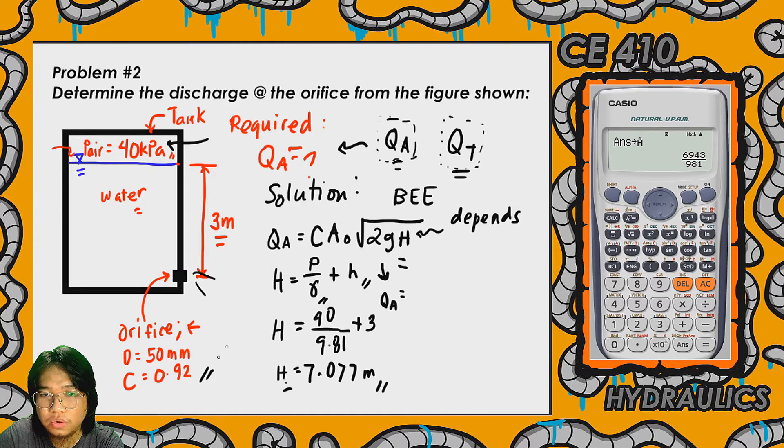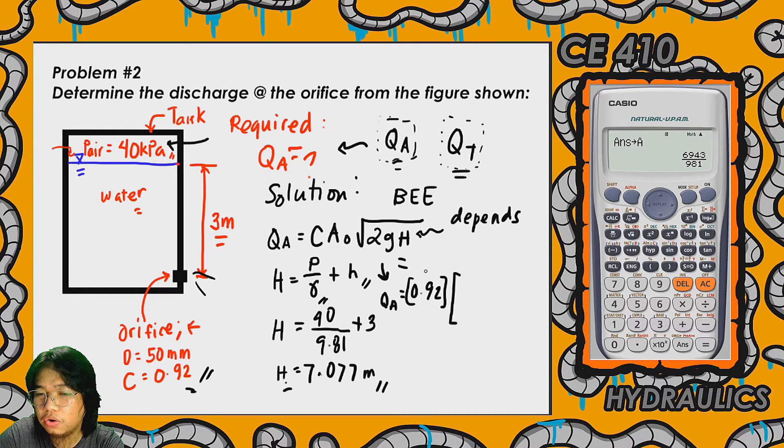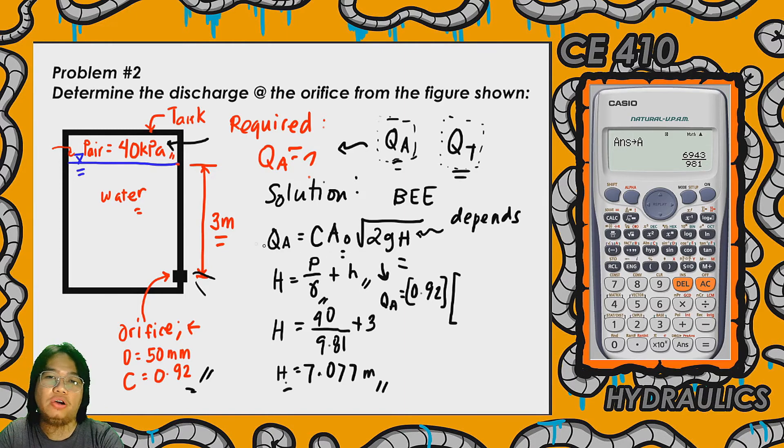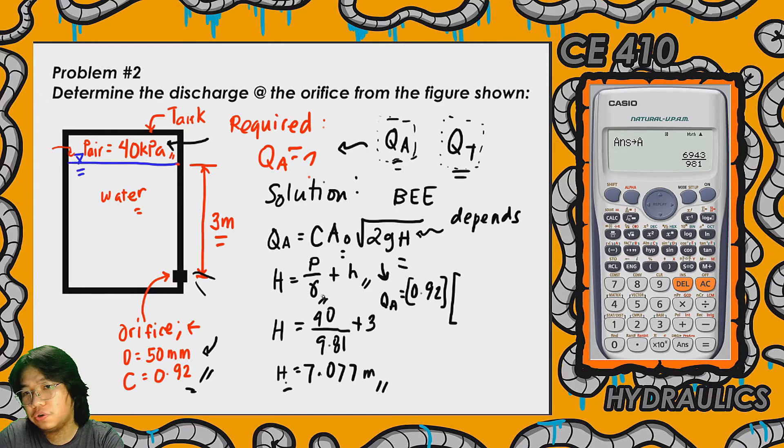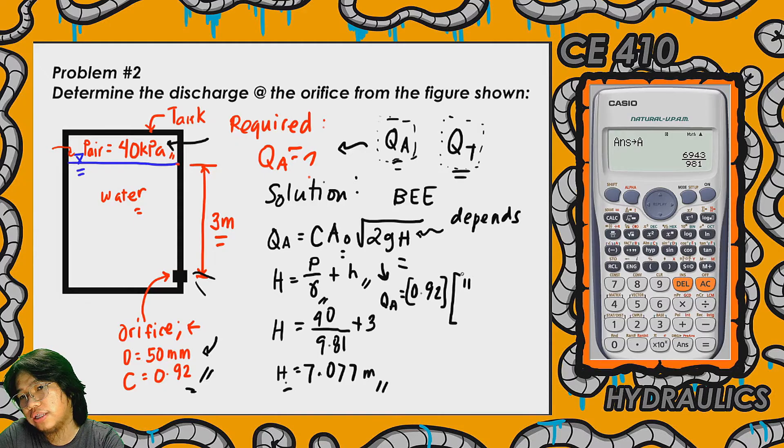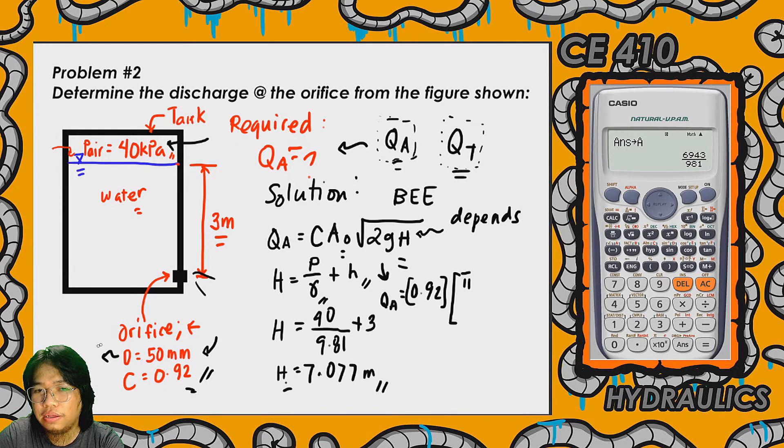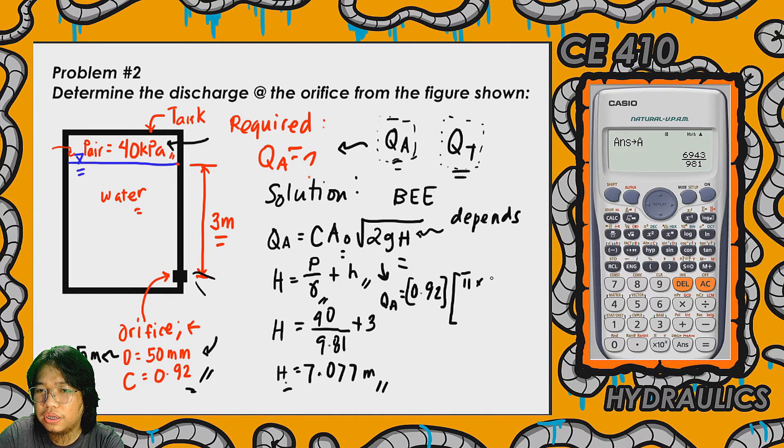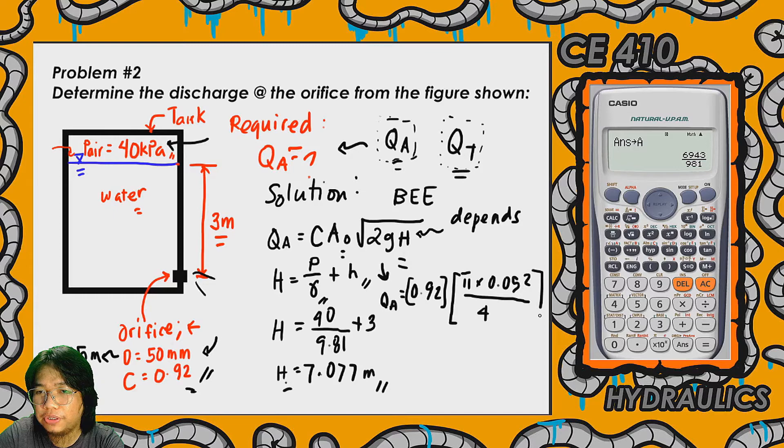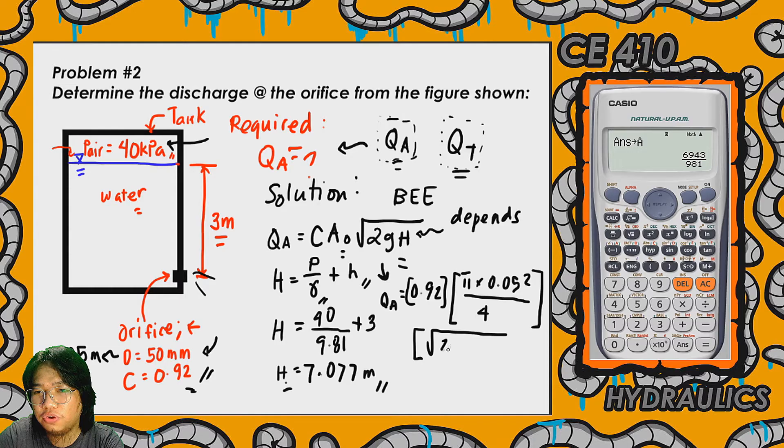Is equal to C, so C is already given, that's 0.92, so that is multiplied by the cross-sectional area of the opening of the orifice. Since the diameter of the orifice is already given, then we use the formula for the area of the circle, that's pi times d squared, so that's 50 millimeters, convert that to meters, that's 0.05 meters. Pi times 0.05 squared all over 4 times the square root of 2 times g or the acceleration due to gravity, that's 9.81, multiplied by h, so h was stored on A in the calculator.